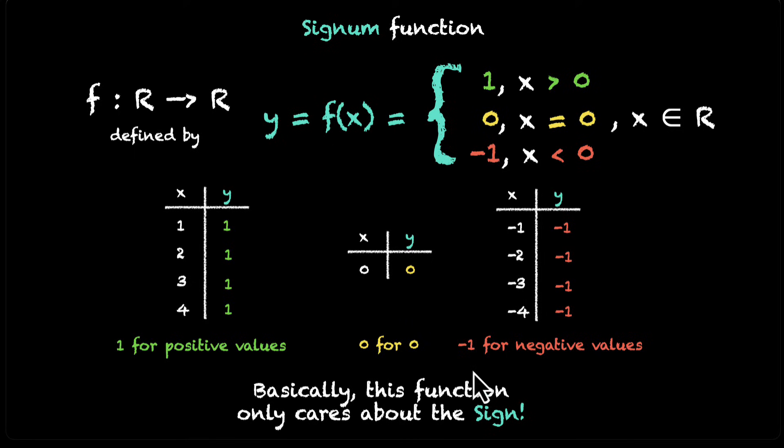These are the three signs that you can have in a number. A number could be positive, a number could be negative, or the number could be 0. Because 0 is neither positive nor negative, we have a separate category, separate column for 0. And I have a feeling that this is where the name of this function is coming from.